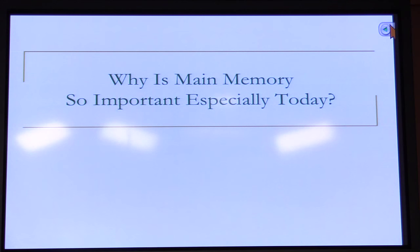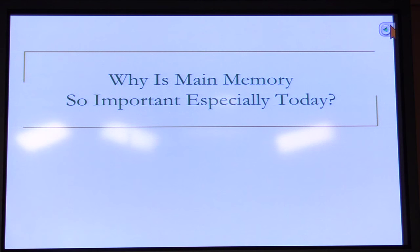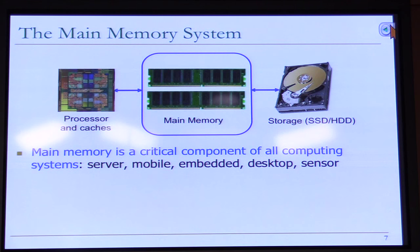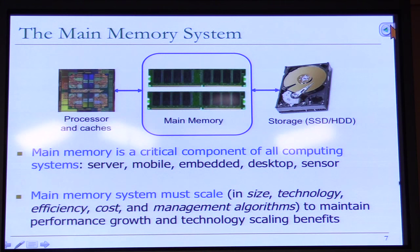Before going into the organization of the memory system, let's talk about why main memory is so important, especially today. Main memory is a working storage — it's a critical component of all computing systems. This system is getting more difficult to design because it needs to scale in many dimensions: technology, efficiency, cost, algorithms, size, and capacity, to maintain performance growth and technology scaling benefits.